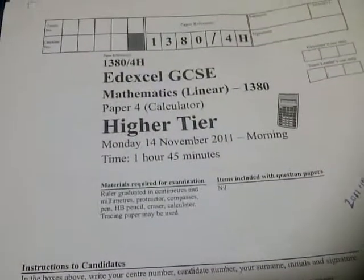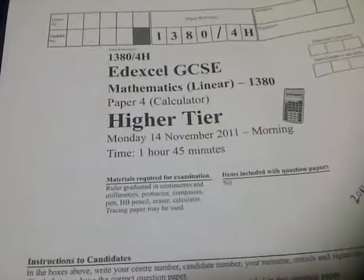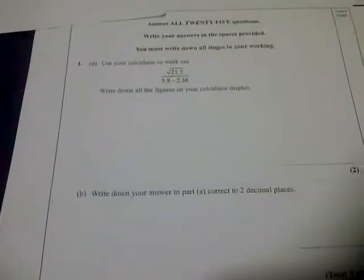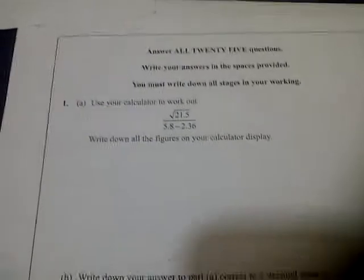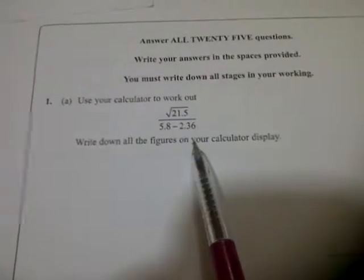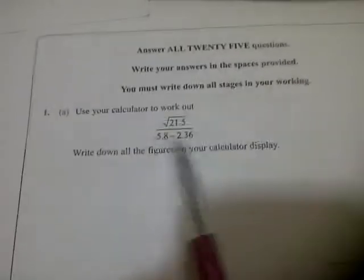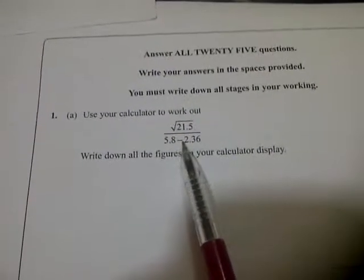Welcome to GCSE format, 14th November 2011 morning. The first question says use your calculator to work out root of 21.5 divided by 5.8 minus 2.36.